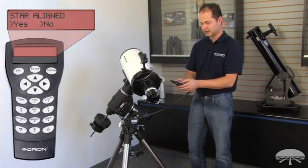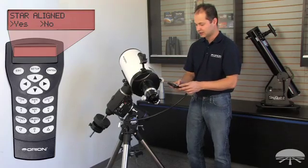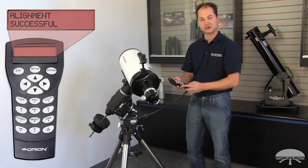Alright, it's found Regulus. Again, center it up with the arrow keys, maybe using your finder or low-power eyepiece. Once you've centered it, hit enter, and it says alignment successful, you're ready to go.